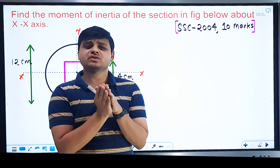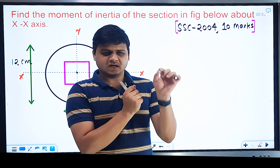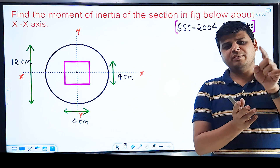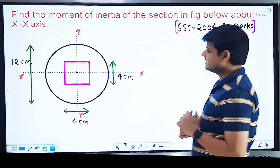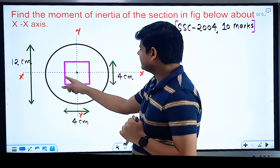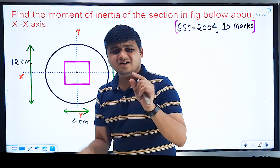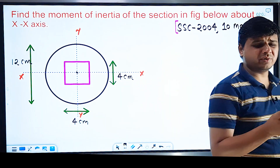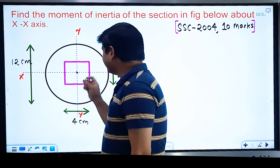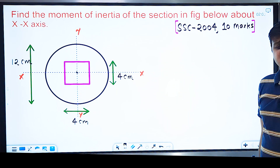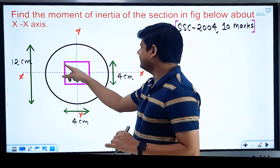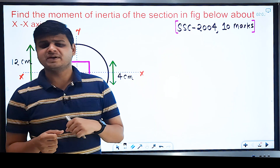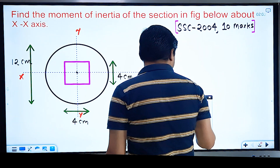Remember two key points: if figures are added, their moments of inertia are also added; if a figure is subtracted, the moment of inertia is also subtracted. In this problem, a square portion has been cut out from the circle — that means the moment of inertia of the square will be subtracted from that of the circle.